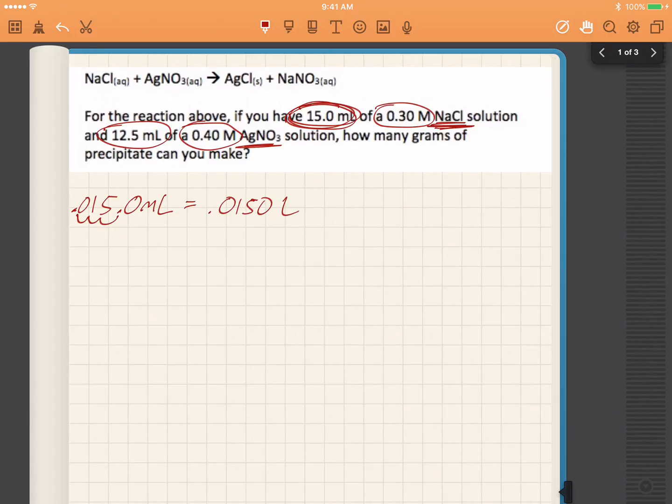I'm going to multiply that by 0.30 molar. And everybody knows that molar means moles per liter. So if I take this and multiply it by 0.30 moles per liter, behold the mighty calculator.